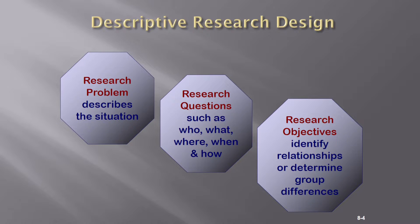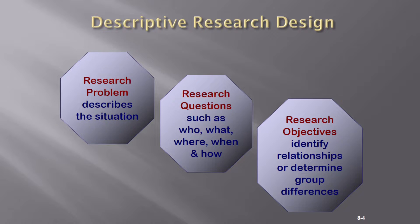From the research problem, you will design the title, in which you will decide whether you would like to conduct qualitative research or quantitative research. You will also decide what type of variables you need in the title. So after selecting a research problem and making a title, then you have to design the research question.